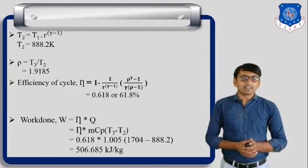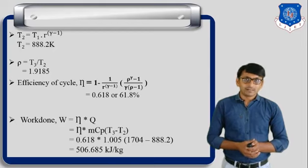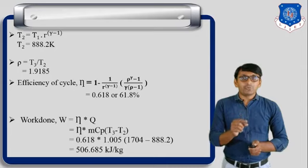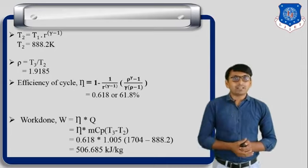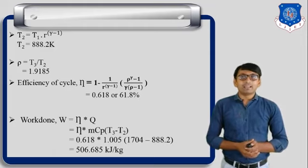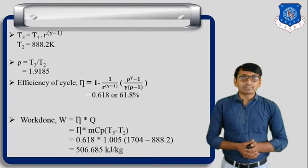First step: T2 equals T1 into R raised to gamma minus 1, giving T2 equal to 888.2 Kelvin. Second step: rho, the cutoff ratio, equals T3 by T2. Putting in the values of T3 and T2, we get rho equal to 1.9185.